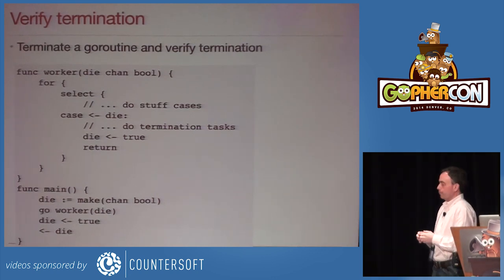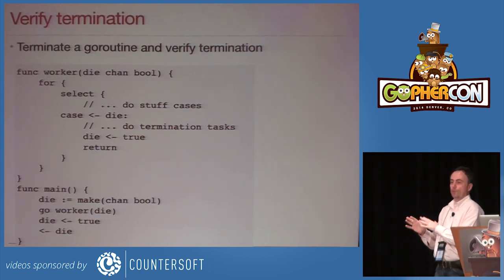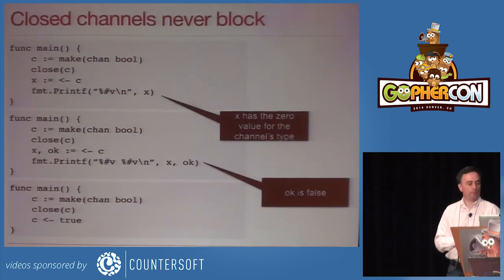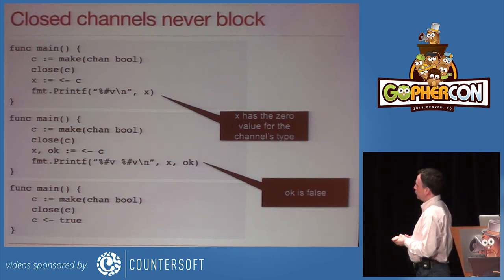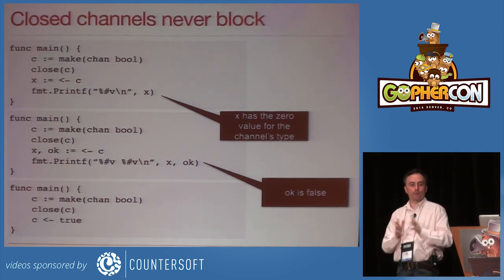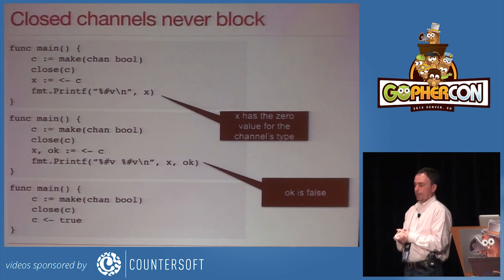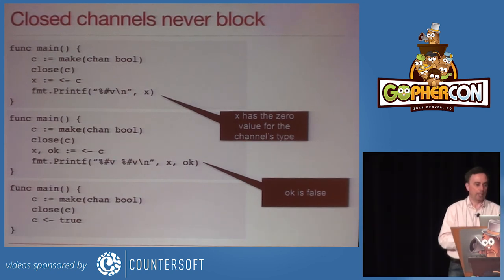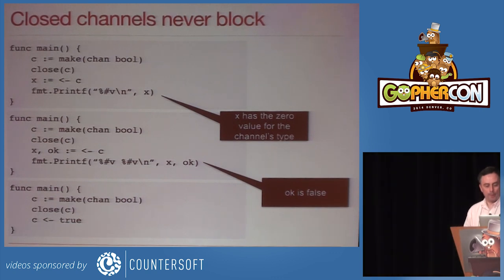There are interesting things about channels that are closed and channels that are nil. Closed channels don't block — if you make a channel, close it, then receive from it, you'll always get the zero value for that channel's type. Using the ok syntax tells you the channel has been closed. If you try to transmit on a closed channel, you get a panic — it blows the entire program up, so don't do that. Closing a buffered channel is like an end-of-line marker: if there's data in the buffer, it doesn't disappear. You can drain the channel and get the zero value once empty. This is how the range operator works on both buffered and unbuffered channels — it reads until the channel is closed.